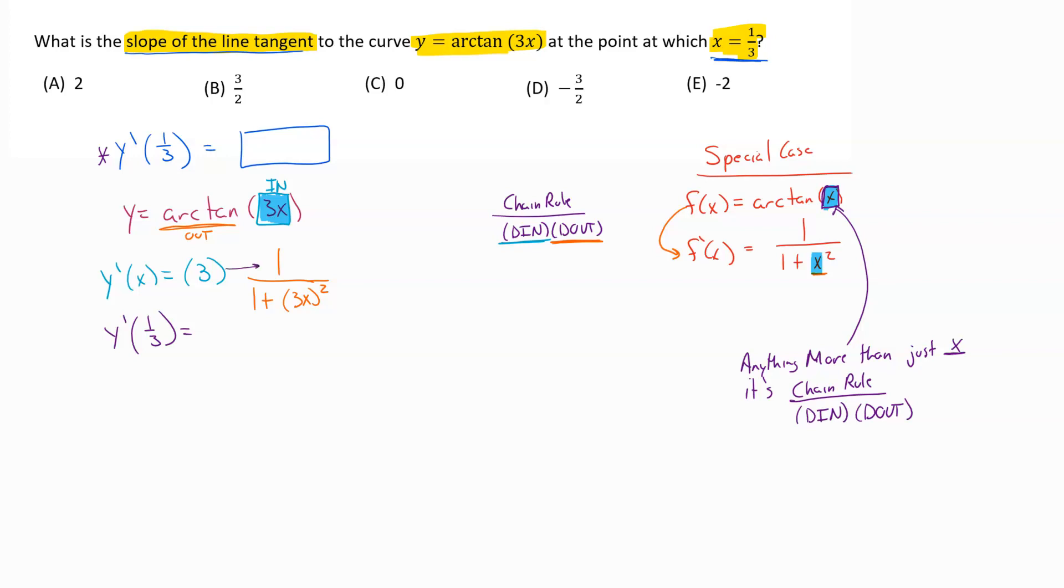So kind of just sliding this onto the top to make our lives easier. This would be 3 over 1 plus, and then we'd have 3, and instead of x inside here, we're plugging in our 1 third, and then that's squared. Cleaning this up, we still have a 3 on top. On the bottom, we have 1 plus 3 times 1 third. The 3s cancel out. That becomes 1 squared. So really what we're looking at here is 3 over 1 plus 1, which is going to give us 3 over 2.